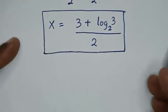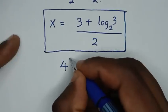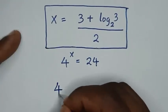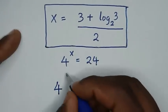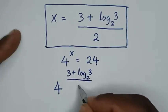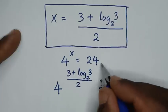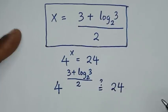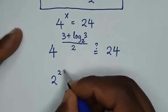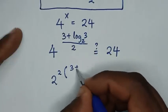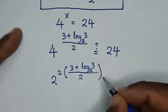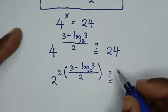Now let's check this answer if it is correct. From our problem, 4 power x is equal to 24. We substitute the value of x, so it will be 4 power of 3 plus log of 3 base 2, all over 2. Is it equal to 24? Simplifying, 4 equals 2 squared, so it becomes 2 power of 3 plus log of 3 base 2 over 2, all over 2. Is it equal to 24?